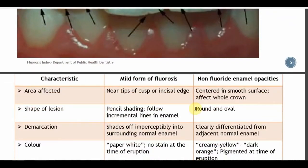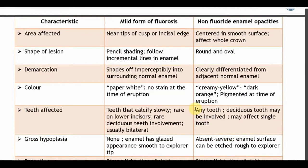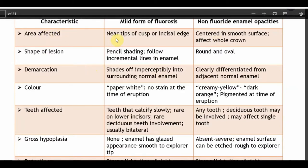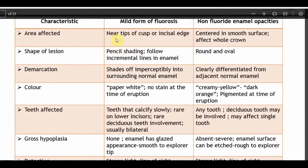Before proceeding, we need to differentiate fluorosis from non-fluoride enamel opacities. How fluoride affects a tooth versus other reasons for enamel opacities: the area affected in fluorosis will always be near the cusp tip or incisal edge, but in non-fluoride opacities it will be on the smooth surface, centered, affecting the whole crown. The shape will always be pencil shading because it follows the incremental lines where mineral deposition occurs; non-fluoride opacities show round and oval demarcation.